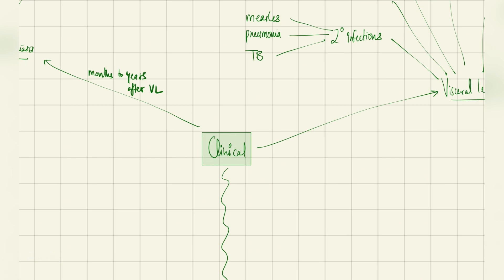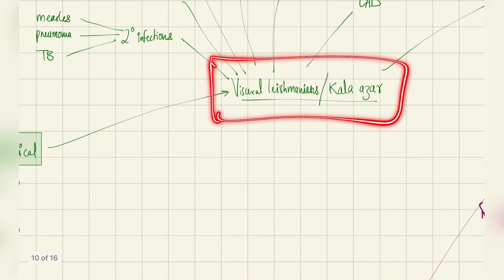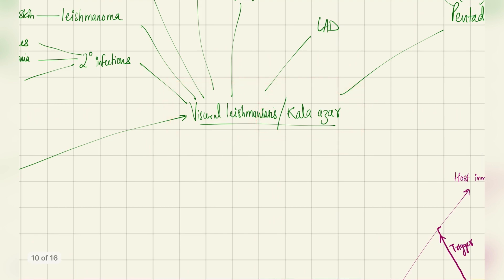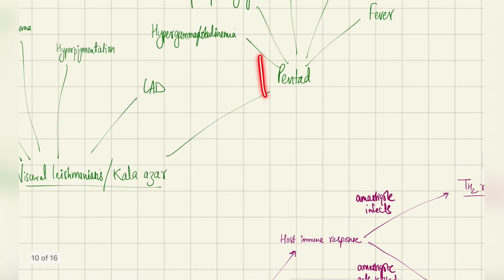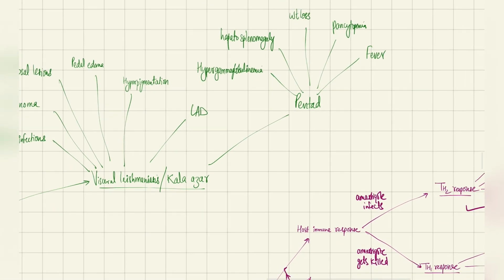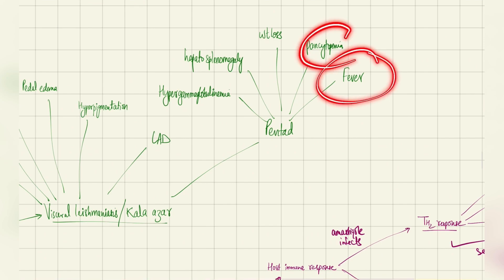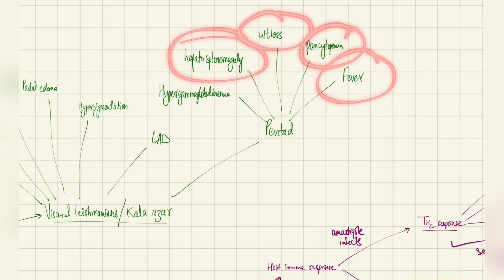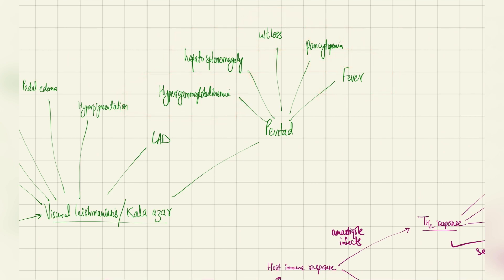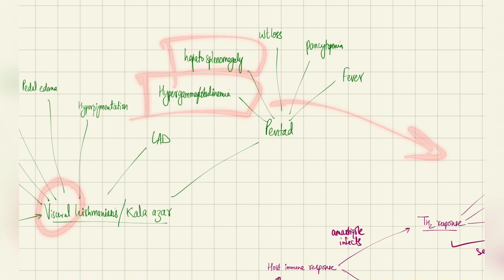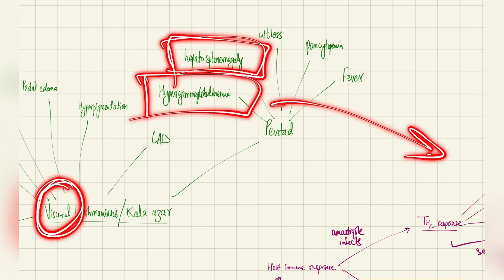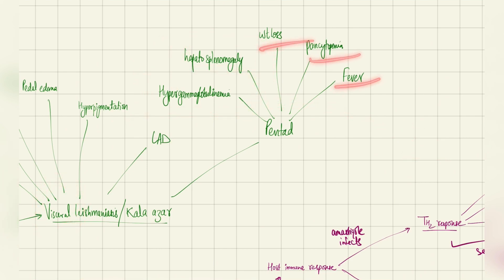Now for clinical manifestations of visceral leishmaniasis (Kala Azar): the name 'visceral' indicates internal manifestations. There is a famous pentad of fever, pancytopenia, weight loss, hepatosplenomegaly, and hypergammaglobulinemia. Hypergammaglobulinemia and hepatosplenomegaly are explained by the pathogenesis; the visceral involvement accounts for these internal findings along with fever and weight loss.